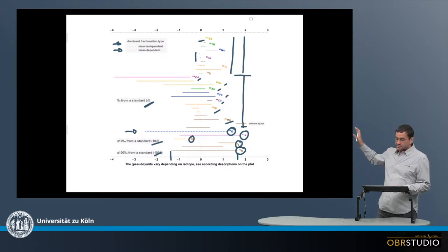And then there might be some general things you can observe here. So maybe in the mass dependent fractionations, these seem to be in chondrites always a little bit lighter here.